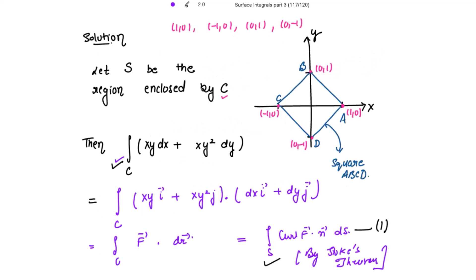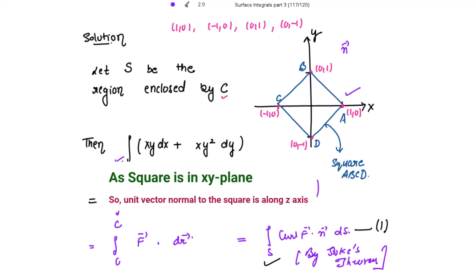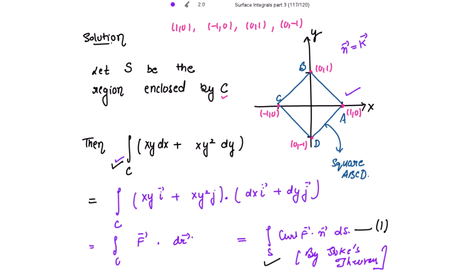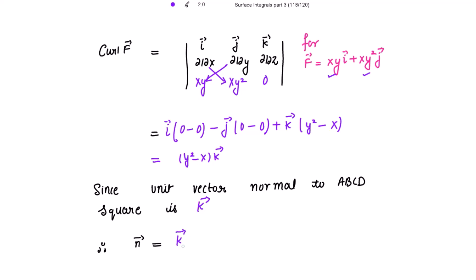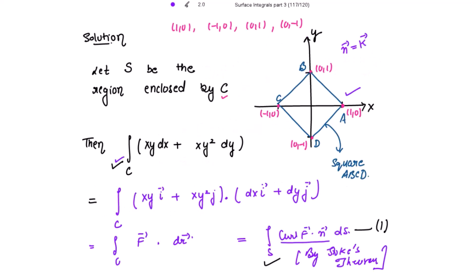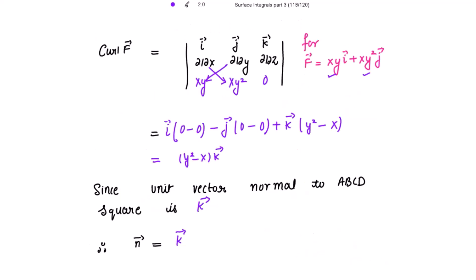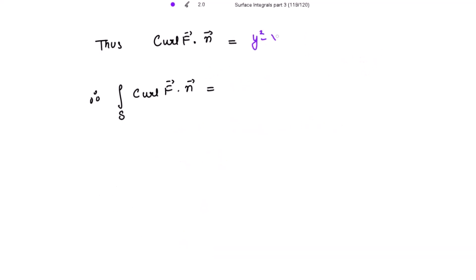Since the unit vector normal to this square is along the positive z-axis, we take n vector to be k vector. Now finding the dot product of curl of F vector with n vector: curl of F is (y² - x)·k vector, and its dot product with k vector gives y² - x, since k·k = 1.